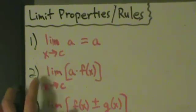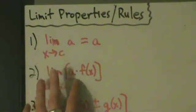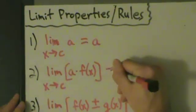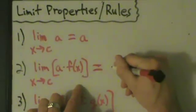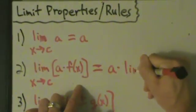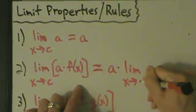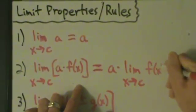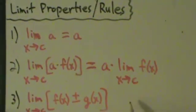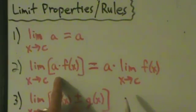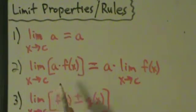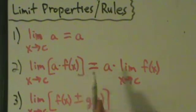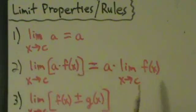Property 2: the limit as x approaches c of a times f(x) equals a times the limit as x approaches c of f(x). This property is nice because it tells you that if you have a constant multiple inside a limit, you can just pull it out. So constant multiples can be pulled out, which is really helpful.